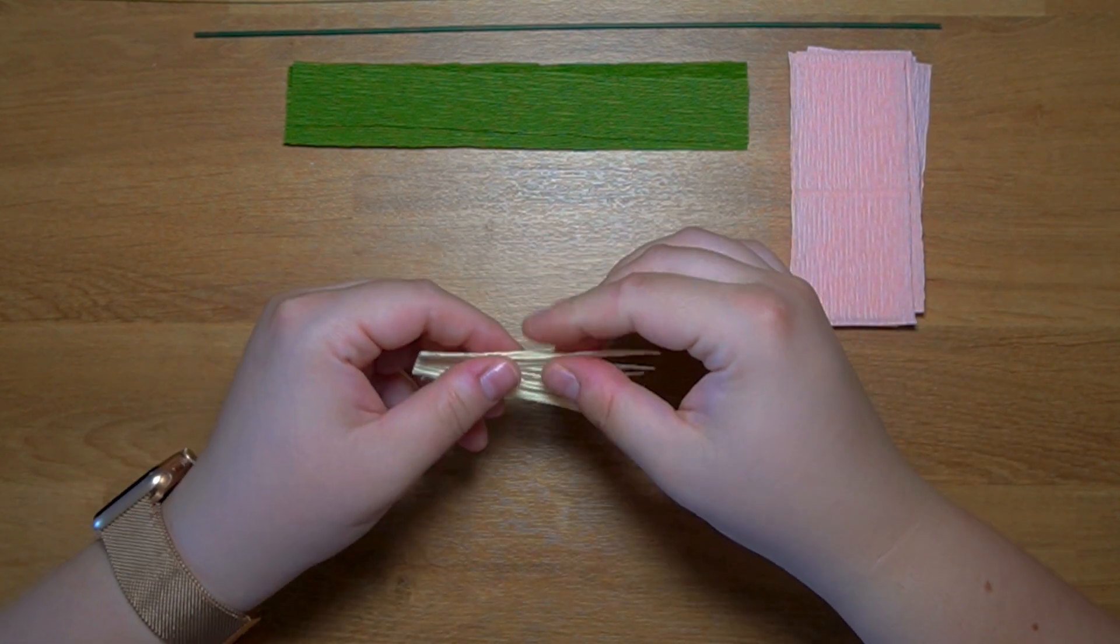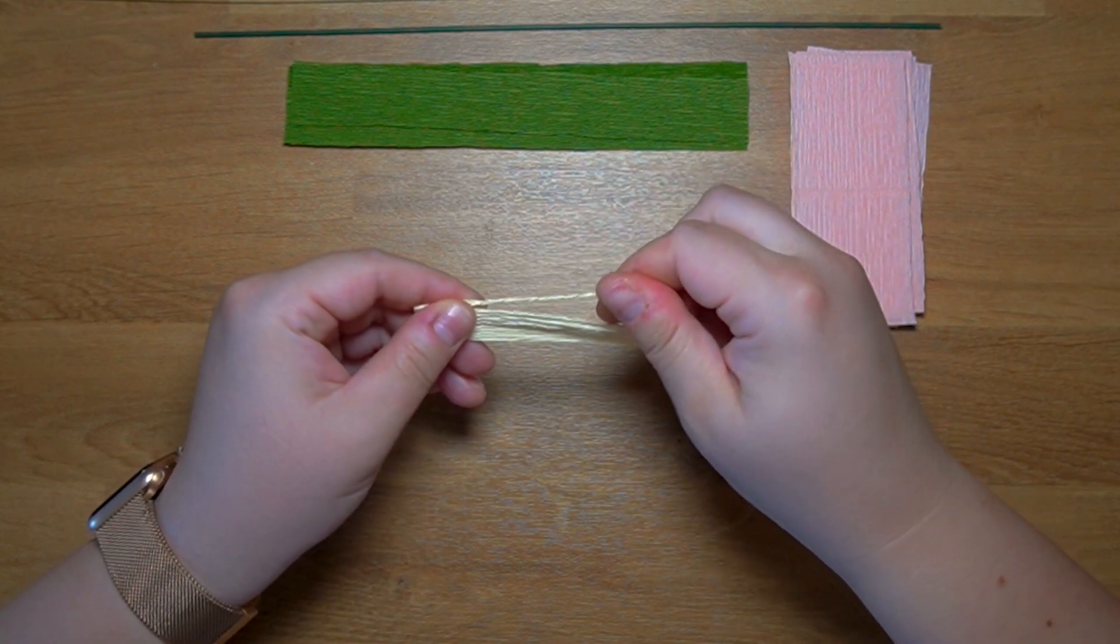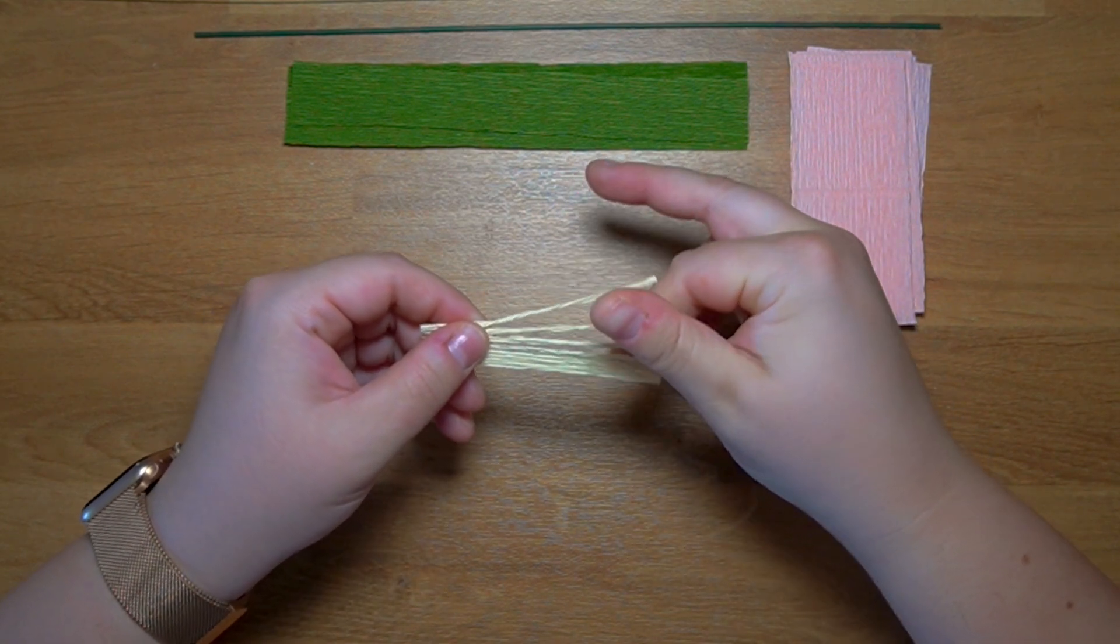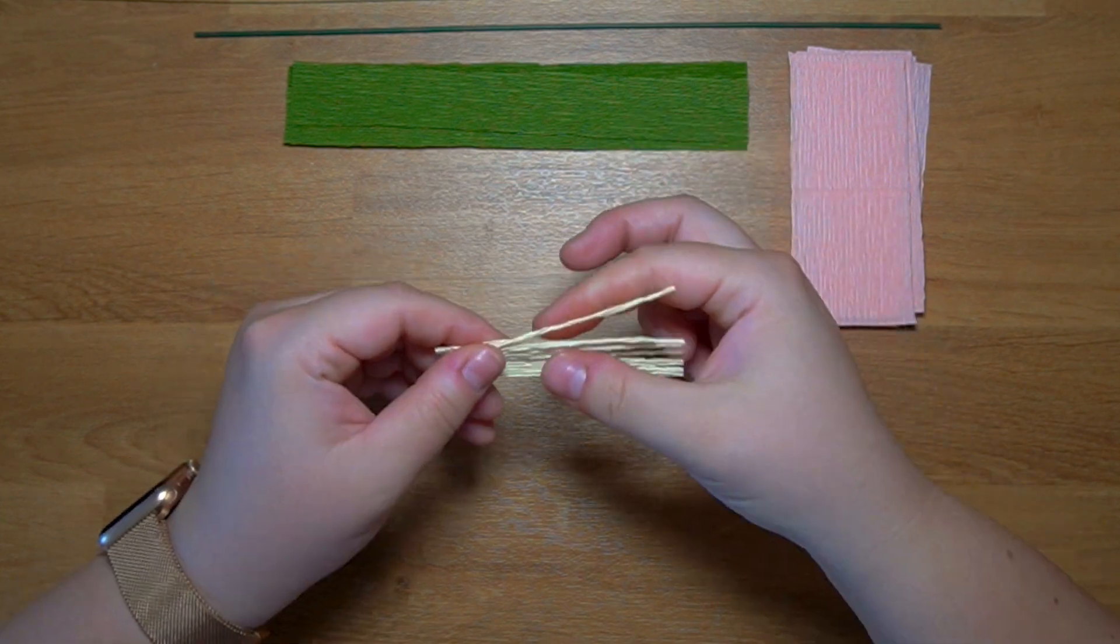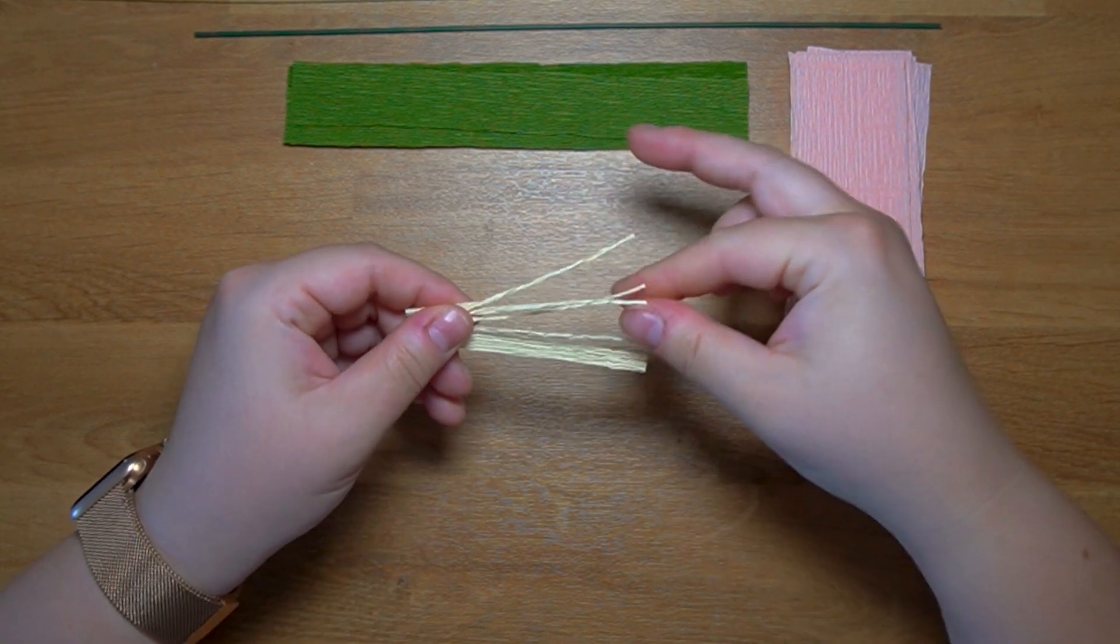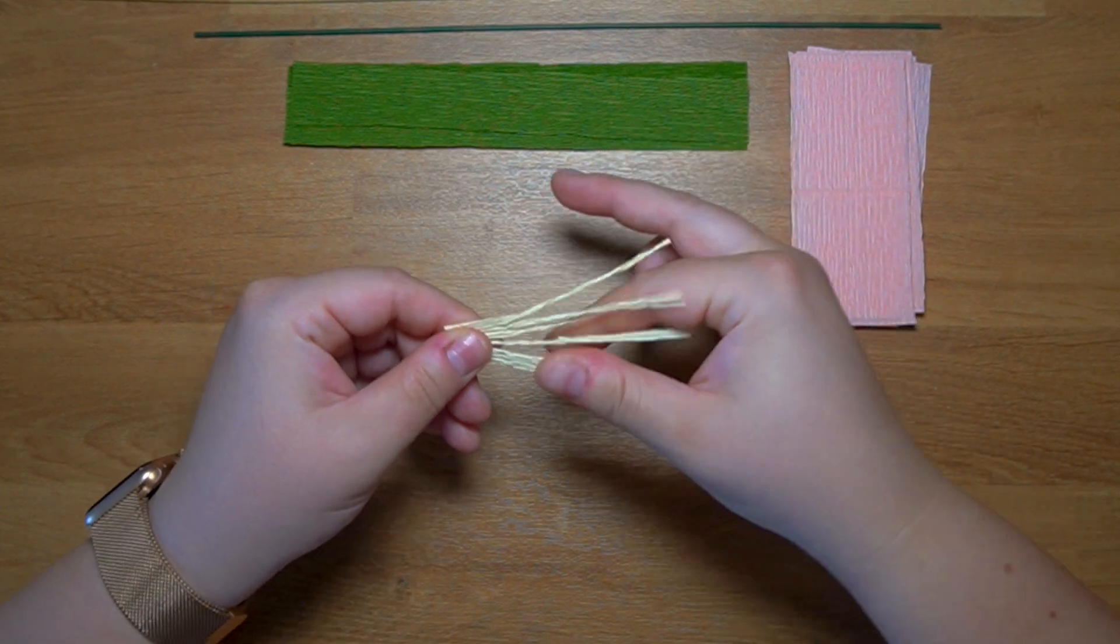Before going to the next step you'll want to twist each and every one of these small pieces as this will make them look a bit more realistic and rounded.